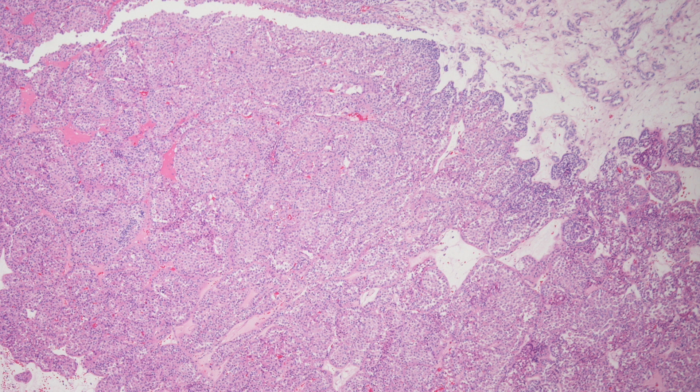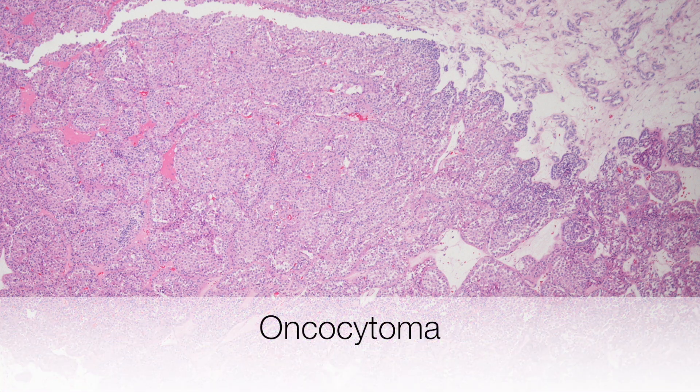The first case was a 30mm yellow mass in the radical nephrectomy specimen from a 44-year-old lady. This is a good example of an oncocytoma.